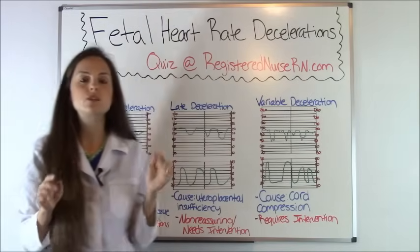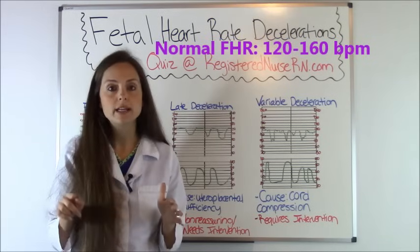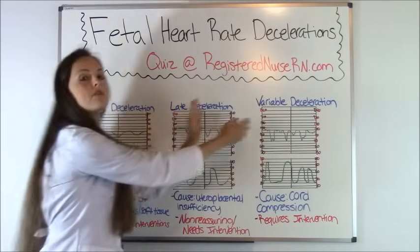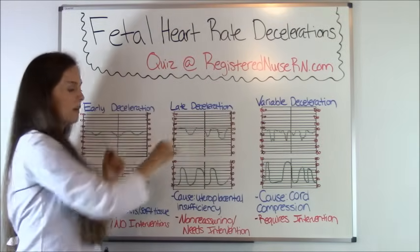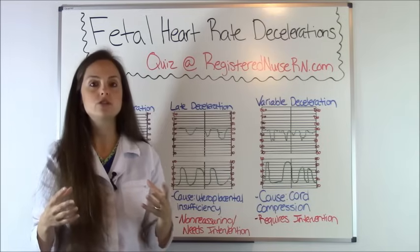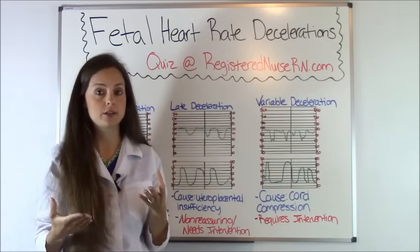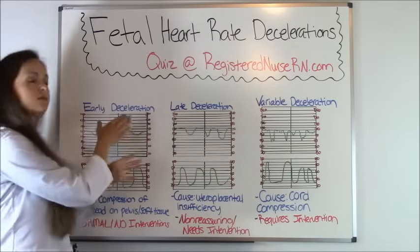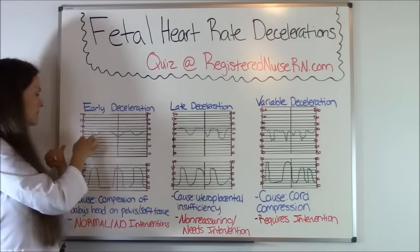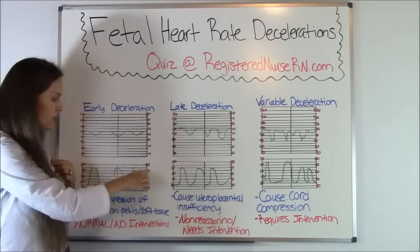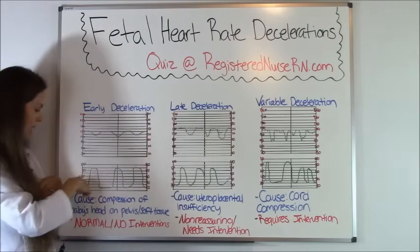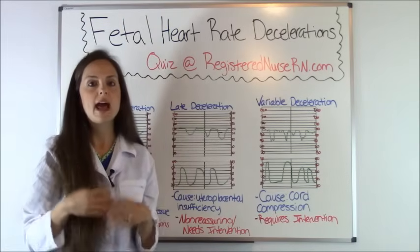The first thing to remember is a normal fetal heart rate: 120 to 160 beats per minute — engrave that in your mind. On the top of these tracings are the fetal heart rates; on the bottom are mom's contractions. This tells us when mom is having a contraction and how the baby's heart rate is responding. The numbers on the side for fetal heart rate go 240, 210, 180, 150, 120, and so on. The bottom numbers measure the strength of mom's contractions in millimeters of mercury, ranging from 20 to 100.